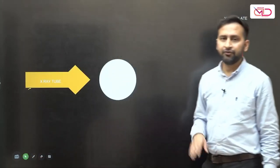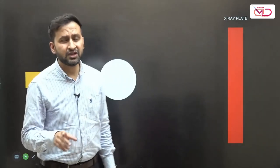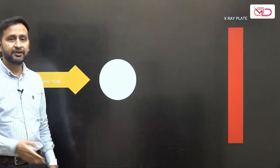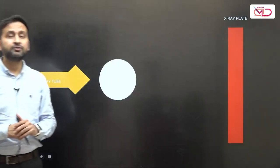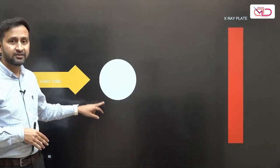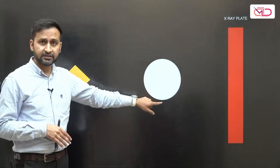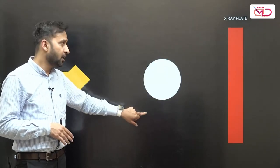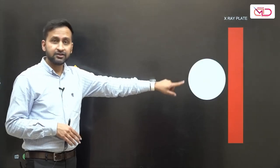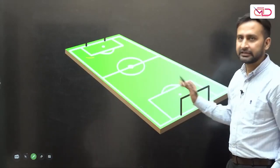Before discussing AP and PA views, the first question is: we know the patient should be placed somewhere between the X-ray tube and the X-ray plate — but where exactly? Should the patient be placed close to the X-ray tube, in the midst, or close to the X-ray plate? Let's try to understand that with a simple experiment.